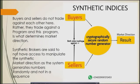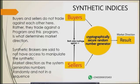The cryptographically secure random number generator is a program — someone's construction — created to determine market direction. Synthetic brokers are said to not have access to manipulate the synthetic market direction, because the system generates numbers randomly and not in a sequence. Derived is currently the only broker offering synthetic indices. A lot of traders who trade boom and crash or volatility indices tend to say the market is manipulated a lot.